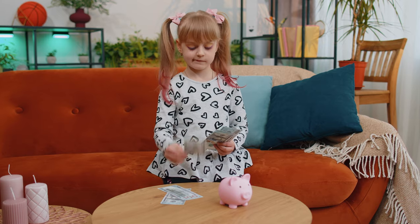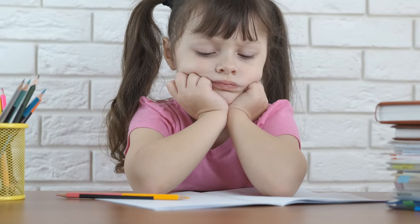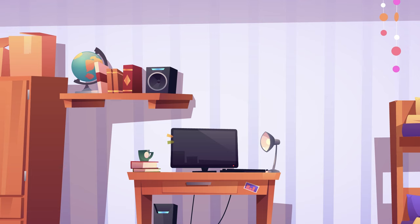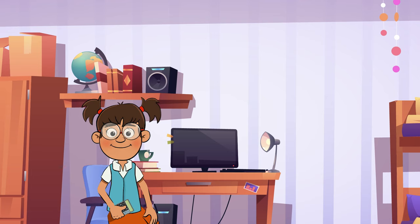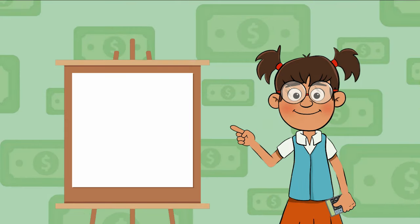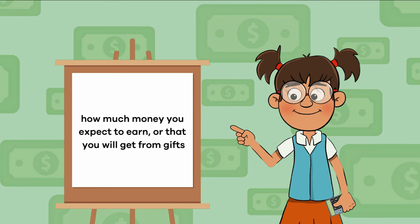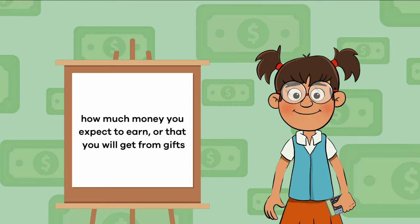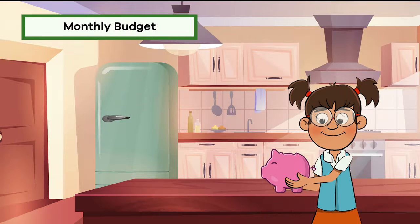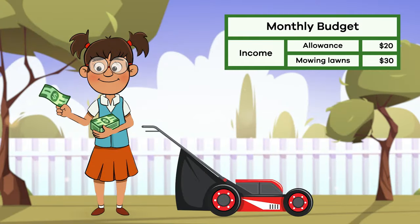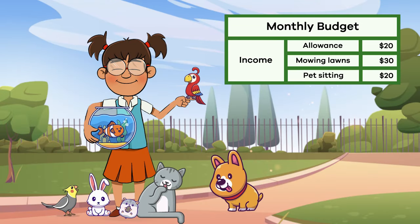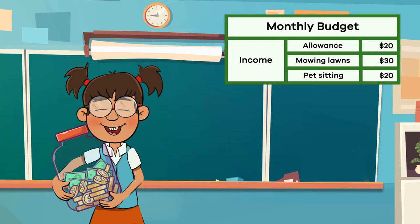So we know that budgets are important, but how do we make one? Let's ask our friend Frankie Finance. Hey Frankie, ready to help us make a budget? First, you need to figure out how much money you expect to earn or that you will get from gifts — that is called your income. Each month, Frankie gets a $20 allowance, $30 for mowing lawns, and $20 for pet sitting, which means she will have a monthly income of $70.